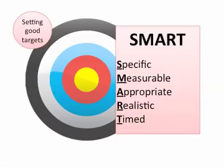They're measurable — we can say this is how it starts and this is when we'll know we've reached the end of that activity, because we'll have something to show for it. So we can measure whether or not we have reached that target. It'll be appropriate — it's not a target they realistically couldn't achieve, and not something that is perhaps too easy for them.